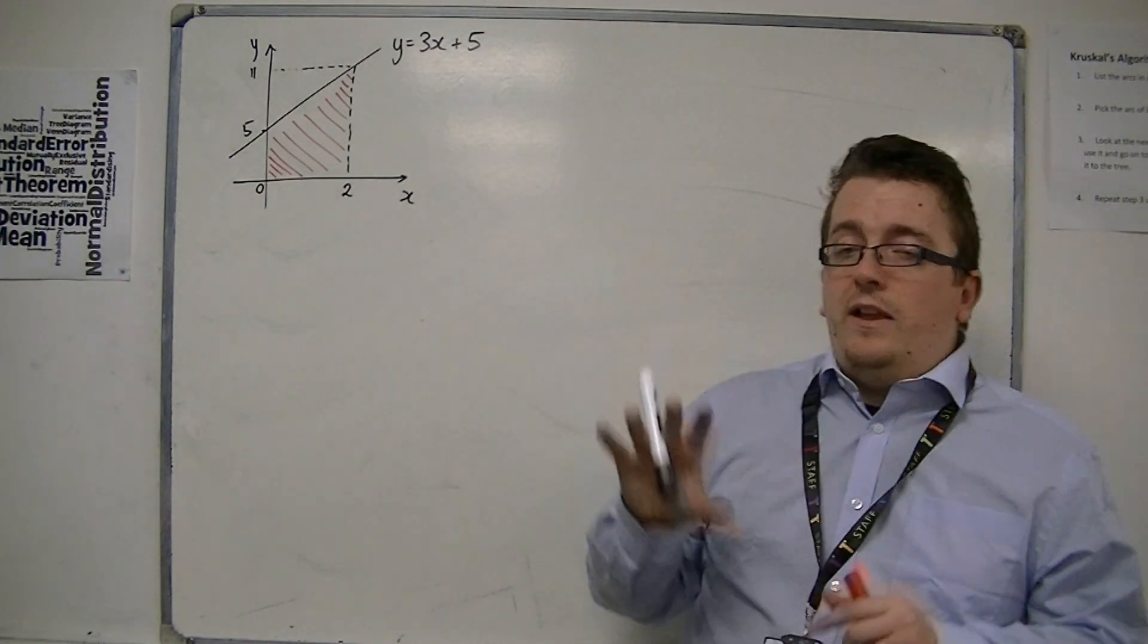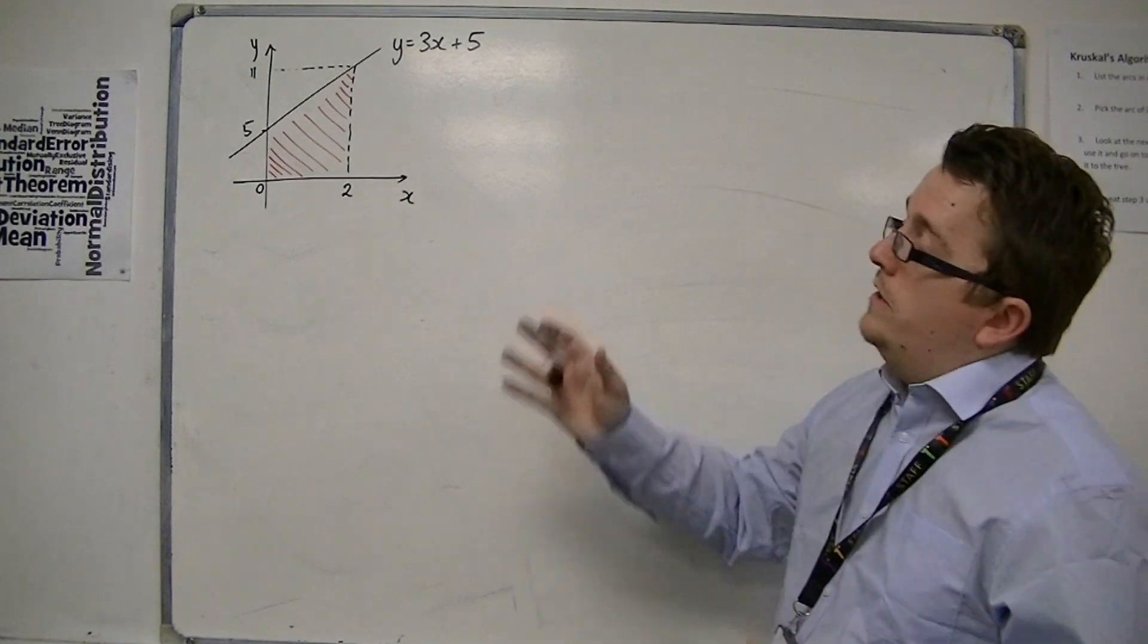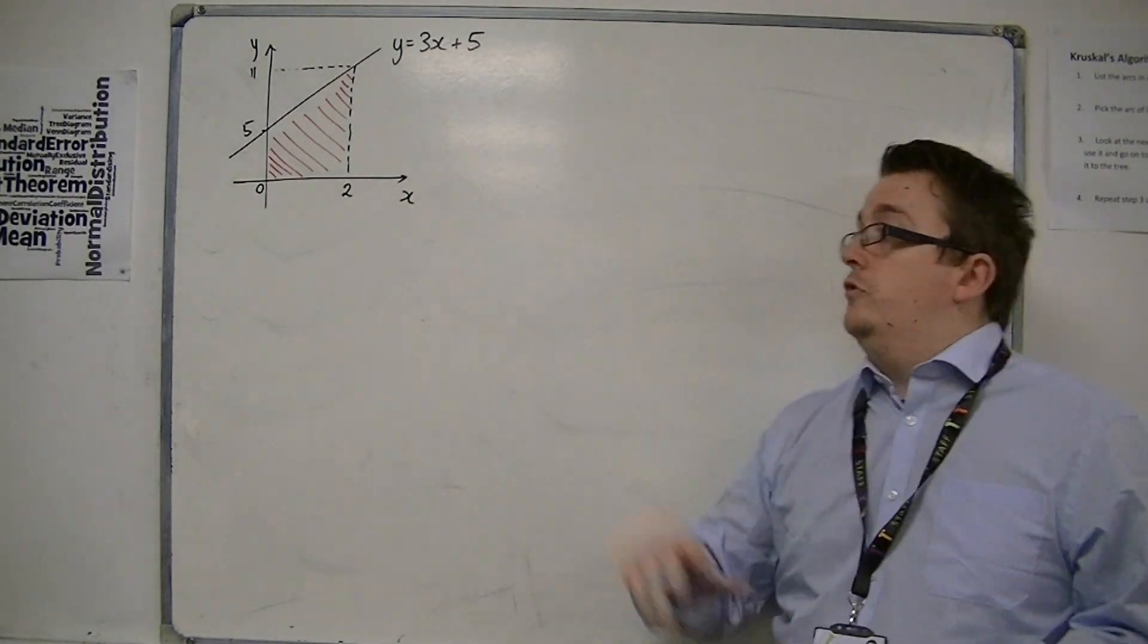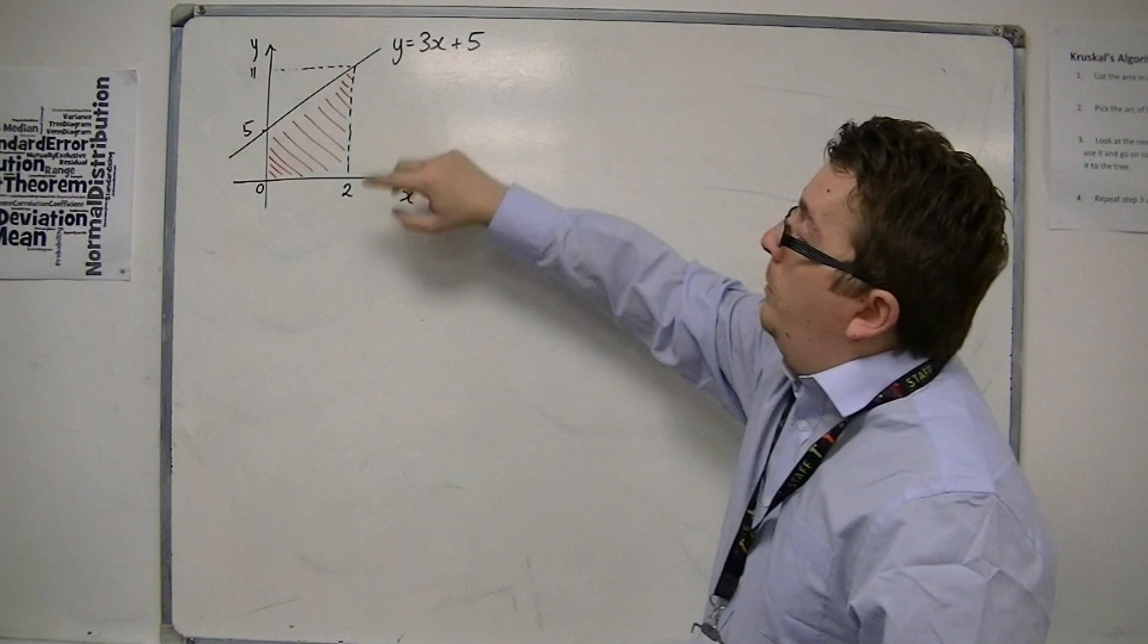Let's start with a very simple problem. We need to find the area of this trapezium, what I've shaded in red. This is the line y equals 3x plus 5,